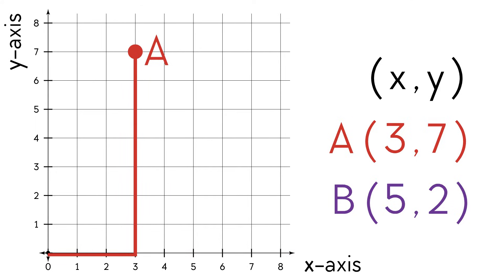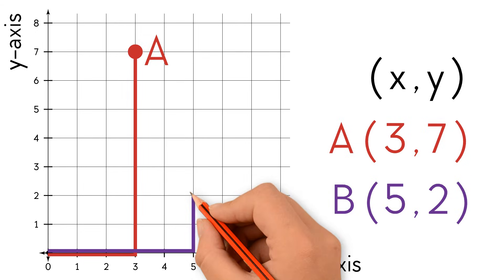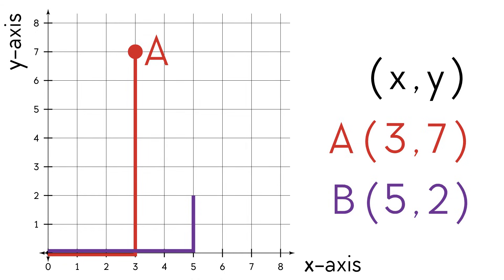Now let's plot point B, (5, 2). We start at the origin and we move right 5 units. Then we move up 2 units. Now we can plot the point.